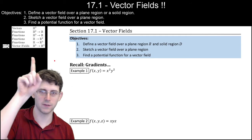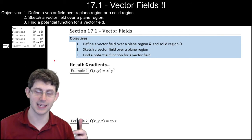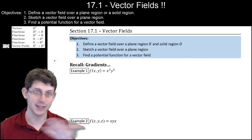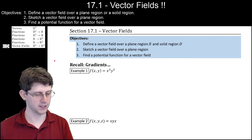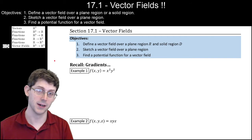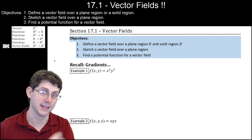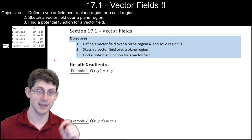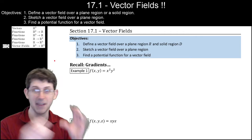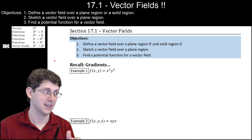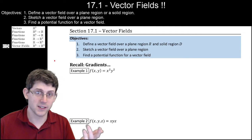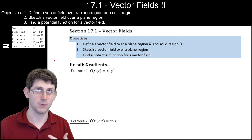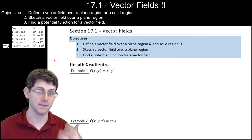If you look at how we've been classifying data types before, they're usually functions that have an input and an output — like a function that has an input of a point in the plane and an output of a number, or the input is a point in space and the output is a number. Here, the input is a point in space and the output is a vector in space. It still has an input and an output, but the objects are different enough that we need to name it differently, so these are called vector fields.